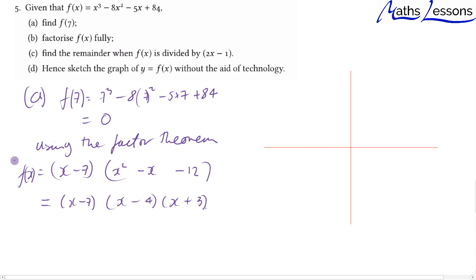We've factorized fully. Now we want to find the remainder when f(x) is divided by 2x - 1. If this was a factor, then f(1/2) would give us 0. If it's not a factor, then f(1/2) gives us the remainder.